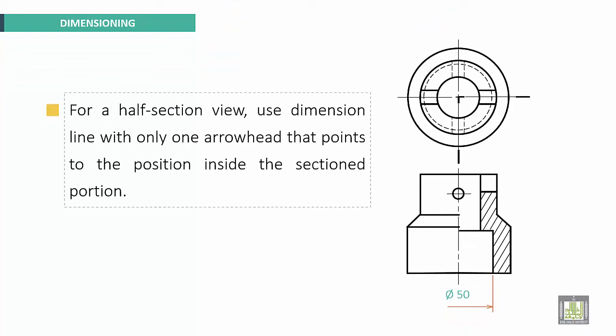For a half section view, use dimension line with only one arrowhead that points to the position inside the sectioned portion. Here we have half section view.